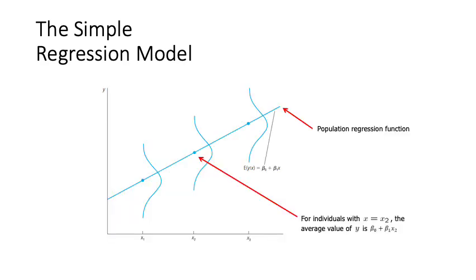In this figure we can see the population regression function plotted according to each different value of the independent variable.